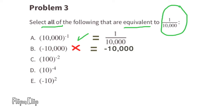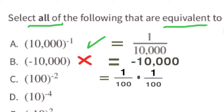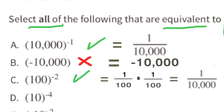Option C: 100 to the power of negative 2. That's equivalent to 1 over 100 to the power of positive 2, which is 1 over 100 × 100. Since 100 × 100 is 10,000, I would select C.